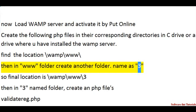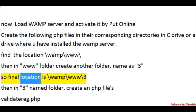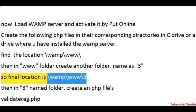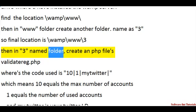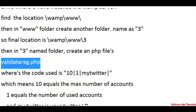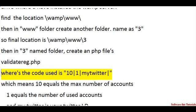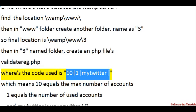Name it '3'. So the final location is \wamp\www\3. In that main folder, create a PHP file named validate_rep.php, where the code used is: 10|1|myTwitter — where the vertical lines separate the values.